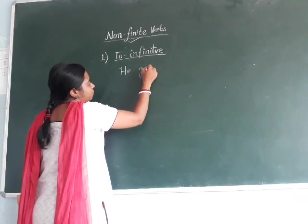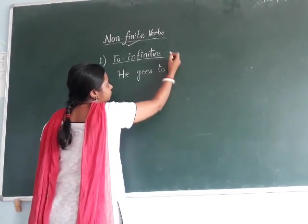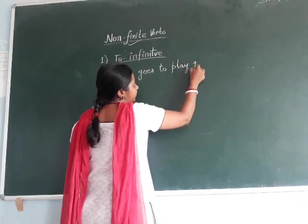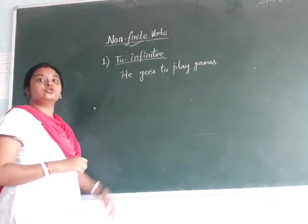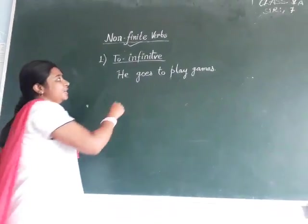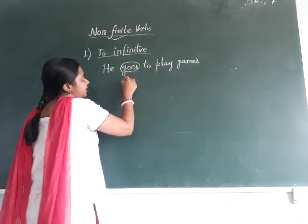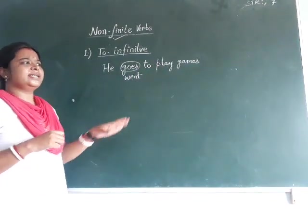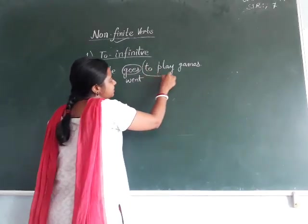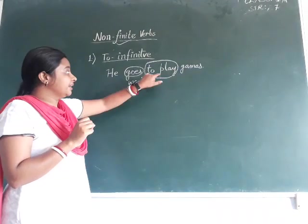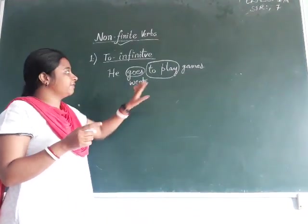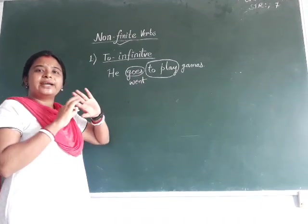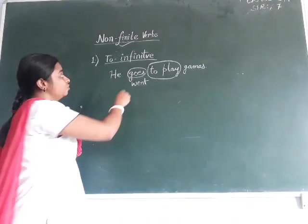The example for to-infinitive verbs will be: 'He goes to play games.' The same sentence, we can also say 'He went to play games,' or even 'He has gone to play games.' Now see, in these sentences, 'to play' remains the same. By reading or listening to 'to play,' you cannot identify whether he goes to play every day, he went to play yesterday, or he has gone to play. We can identify the tense through 'goes' and 'went,' but 'to play' does not tell us the tense.